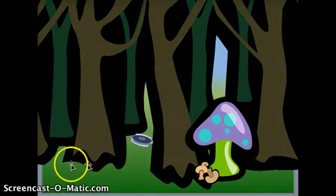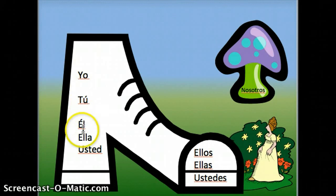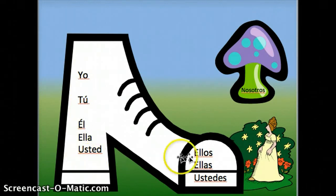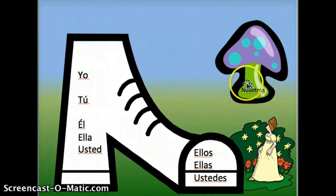Because the old lady never went into the forest looking for him. She went back to her shoe, changed the shoelaces, and now the only children that live there are yo, tú, the triplets el, ella, and usted, and the other set of triplets ellos, ellas, and ustedes. Nosotros lives way out here in the forest under the mushroom.